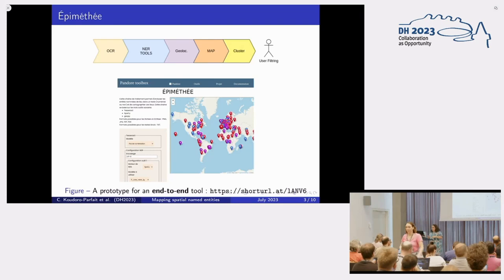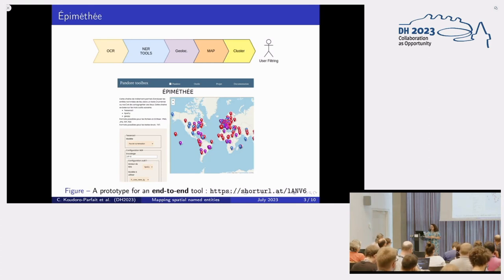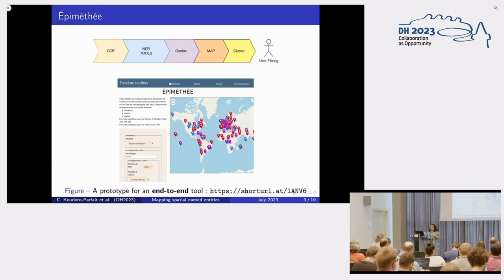This slide presents the workflow of Epimethée, because it's an end-to-end tool. The user provides PDF or JPEG images of the text, which are processed with Tesseract, then named entity recognition is applied using two or three NER tools. Epimethée then performs geolocalization, charts and maps the results, and proposes clusters — finally producing a map.